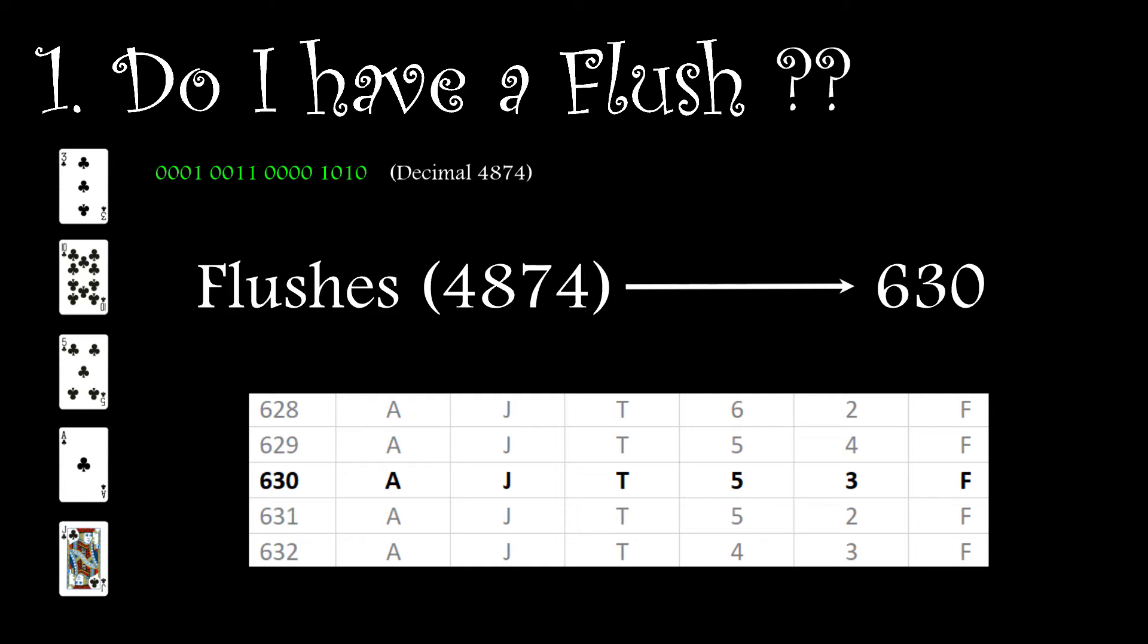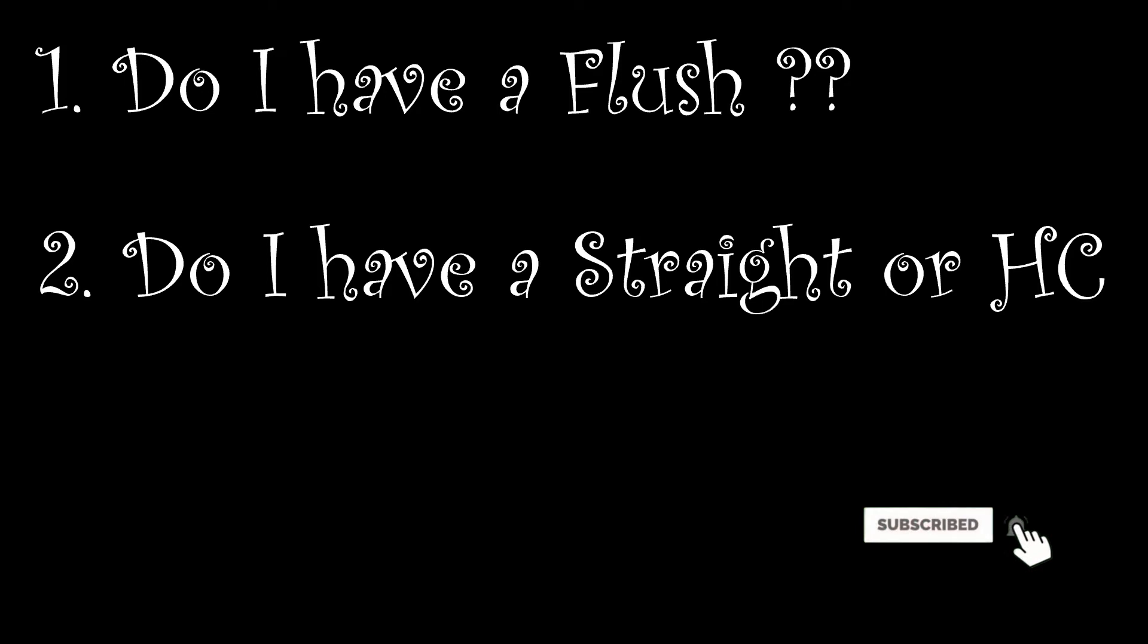But what if the answer to the first question is no, we don't have a flush? Well then I need to ask question two. Do I have a straight or a high card? And to answer that, I'll need a second lookup table.